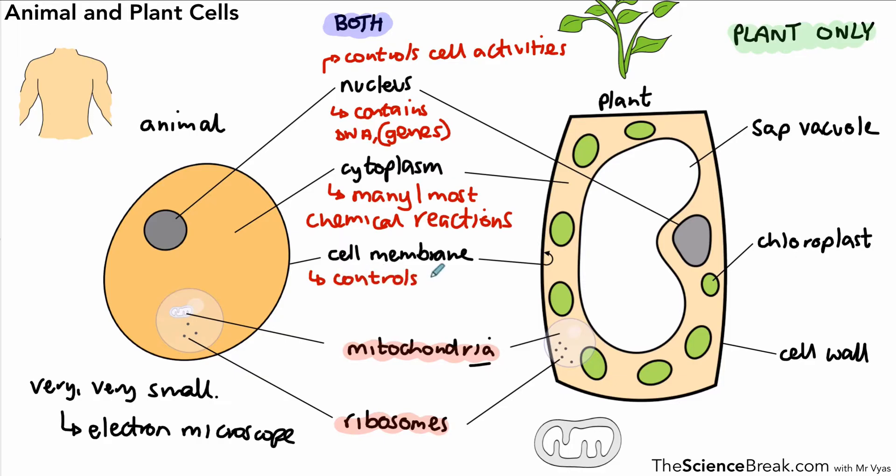The overall function is it controls what goes in and out of the cell. The mitochondria are very important—they have the job of releasing energy through this process called respiration. In fact, it's aerobic respiration, but they release energy through respiration.